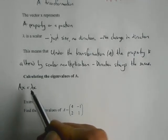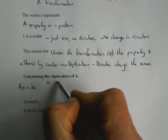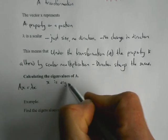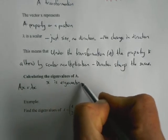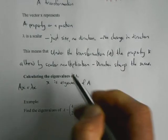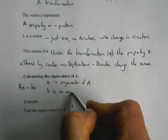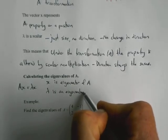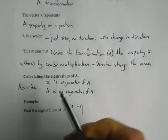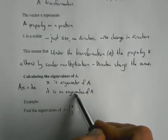x is what we call an eigenvector of the matrix A, and lambda is an eigenvalue of A. Lambda is just a scalar, so it's a value, whereas x is a vector, so it's an eigenvector of A.